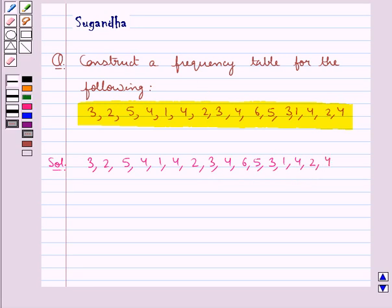Now that we need to construct a frequency table, first we will arrange the given data in an ascending order. So we have arranged the given data in an ascending order. Now we will put this data in a tabular form.